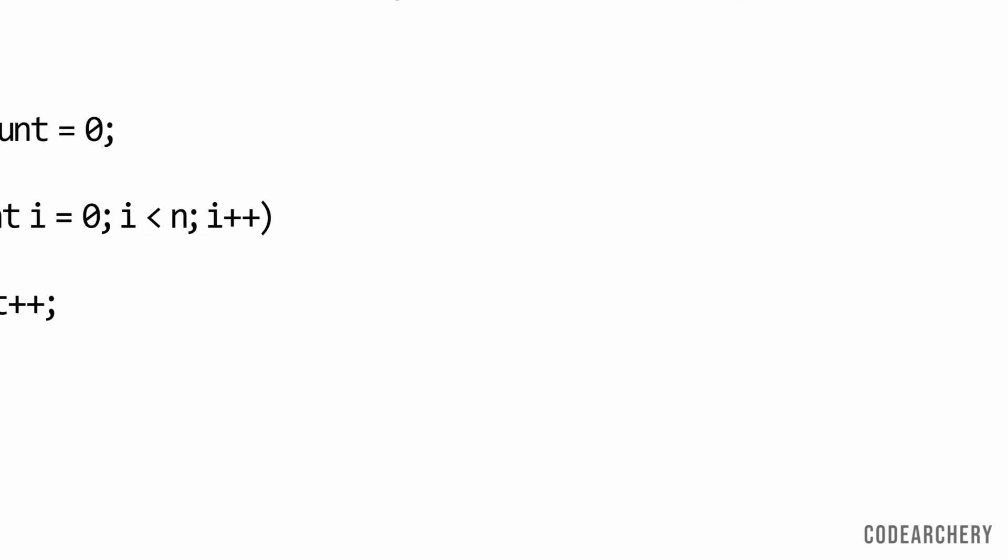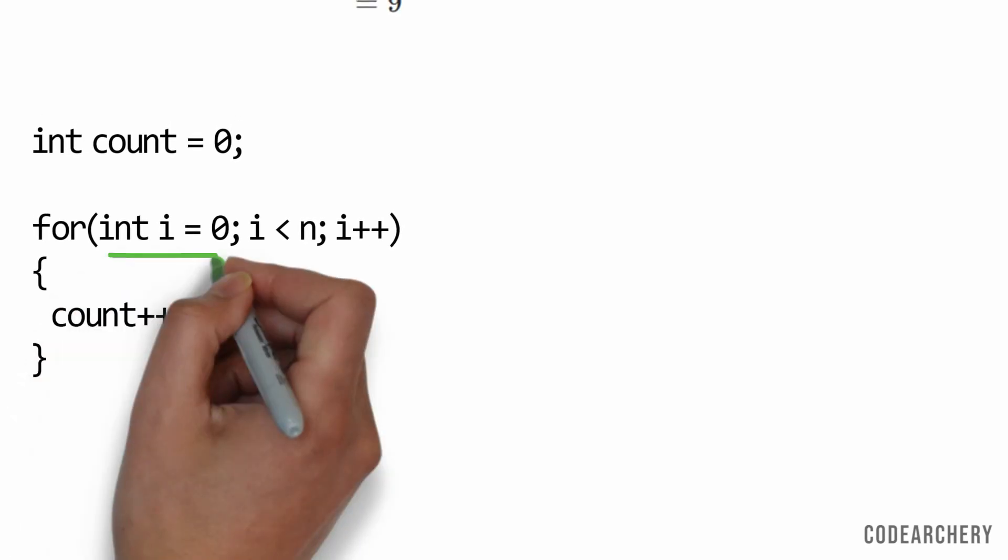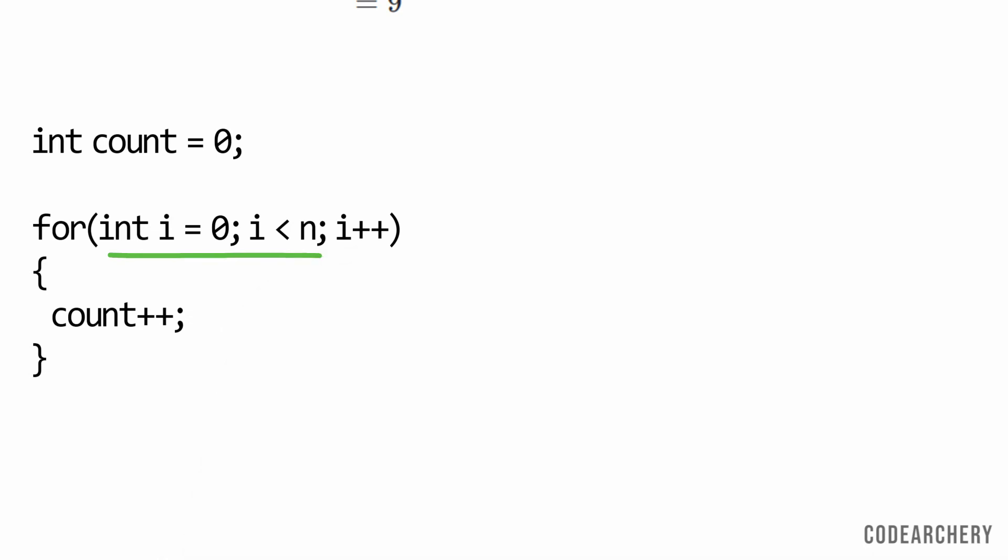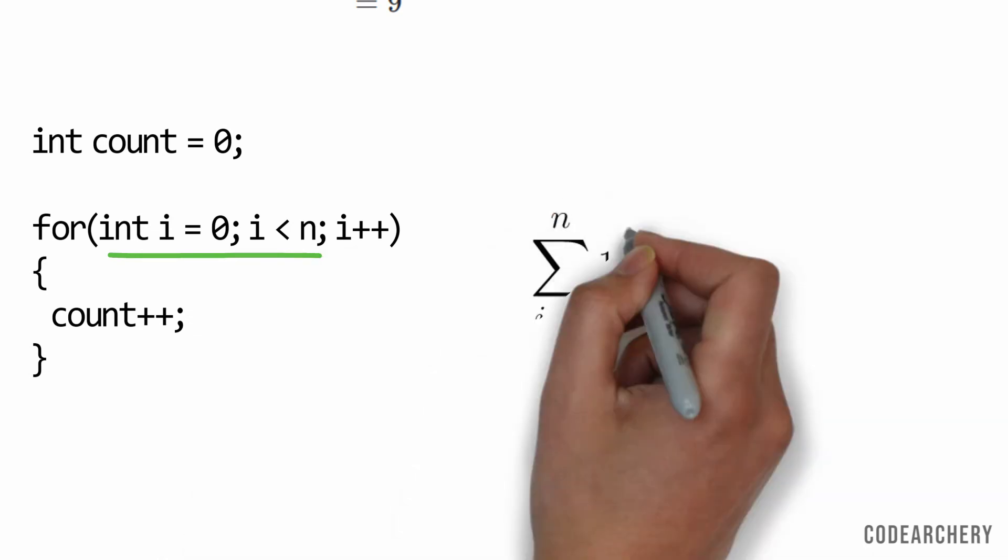Alright. Let's take some programming example. Now we have to calculate time complexity of this for loop. So this loop goes from 0 to n. So in terms of summation our equation look like this.